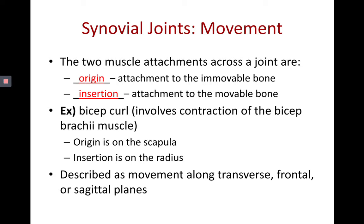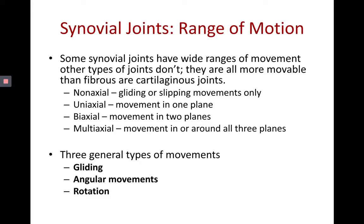We're also going to describe movement along different planes: transverse, frontal, or sagittal. If joints don't move along any planes, they're non-axial. If they move along one plane, they're uniaxial; along two, biaxial; and if movement is allowed around all three planes, they're multi-axial. For example, gliding types of joints generally perform non-axial movement, while other types allow angular and rotational movements.